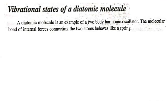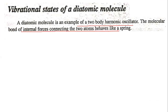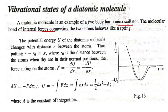A diatomic molecule is an example of two-body harmonic oscillators. The molecular bond — the internal force connecting the two atoms — behaves like a spring. In that case, we have a potential energy equation.